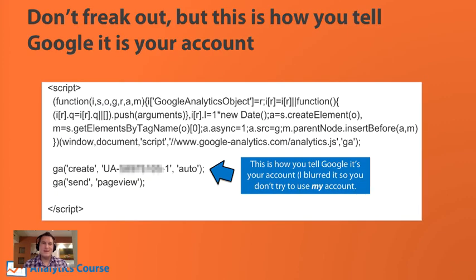Going back to that JavaScript code, this is how we can tell Google Analytics which account it is. If you look at that specific line, you can see how Google knows what account it is. I've blurred out my account ID because I've actually seen people send data to the wrong account. As you can see, that's what the account is — you're just telling Google Analytics 'this is my account,' and that's how they know what data should be collected.